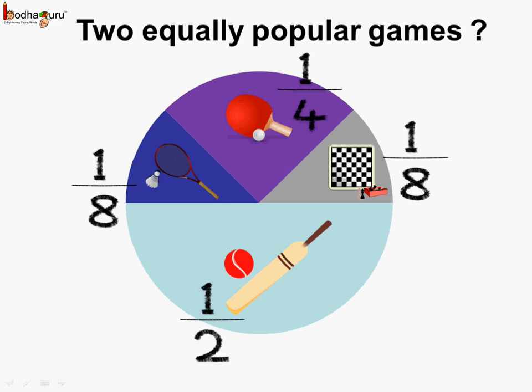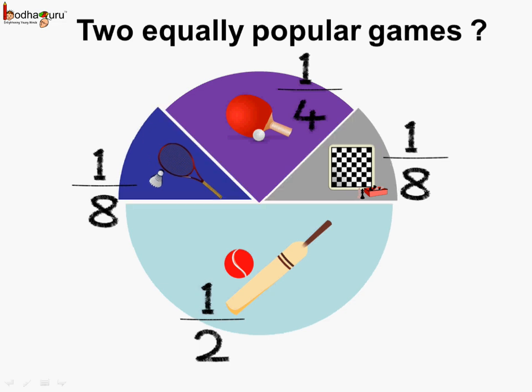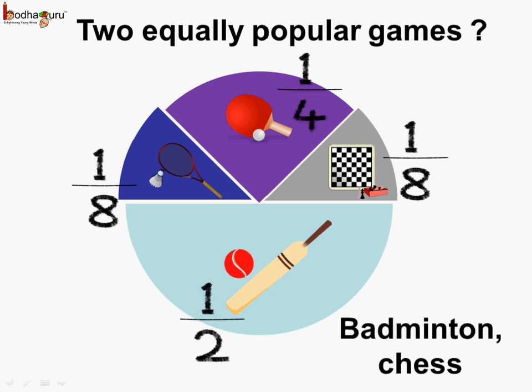Can you tell which were the two games equally popular? If we see the chart carefully, the sizes of these two parts are the same and they represent badminton and chess. So we can say badminton and chess were equally popular games. If we see the fractions related to them, both are 1 by 8 — equal. So badminton and chess were equally popular games.